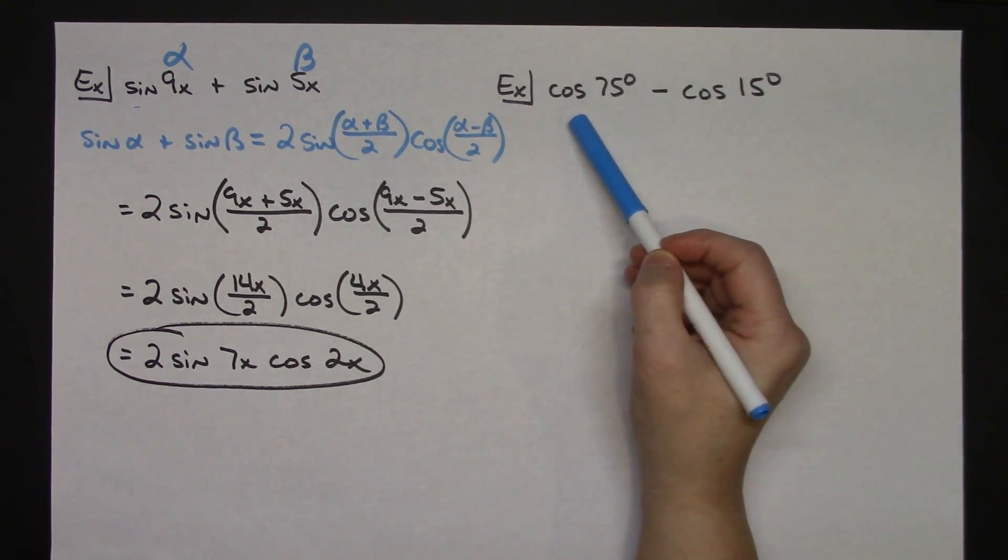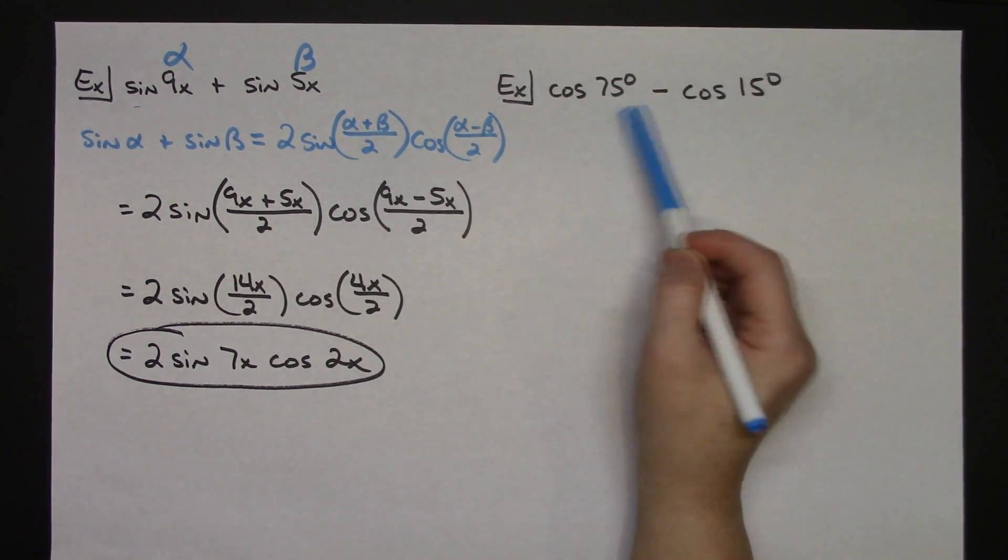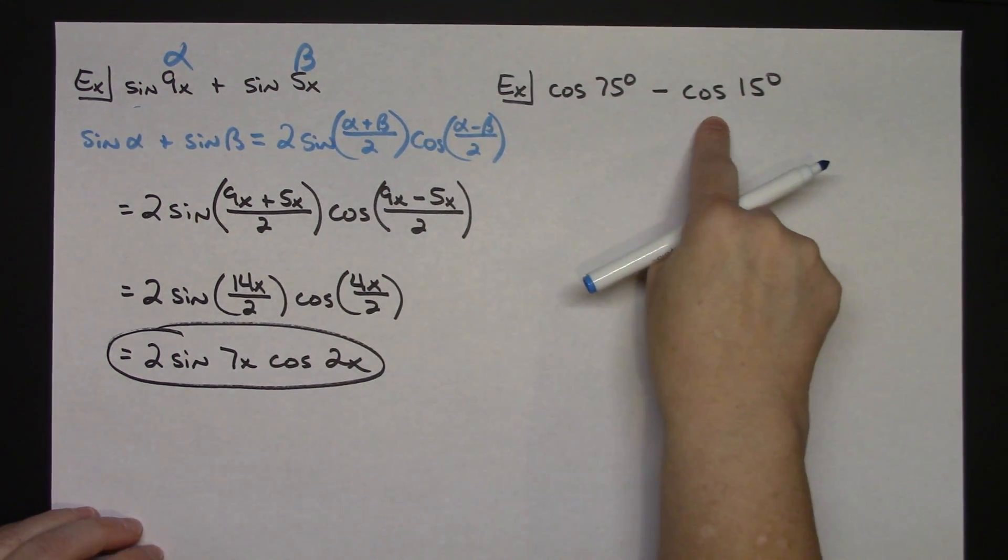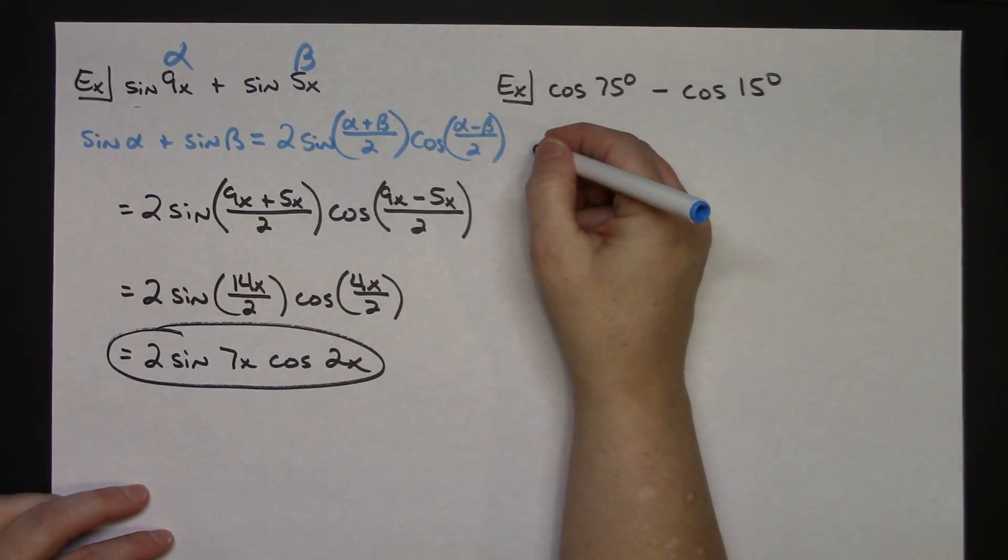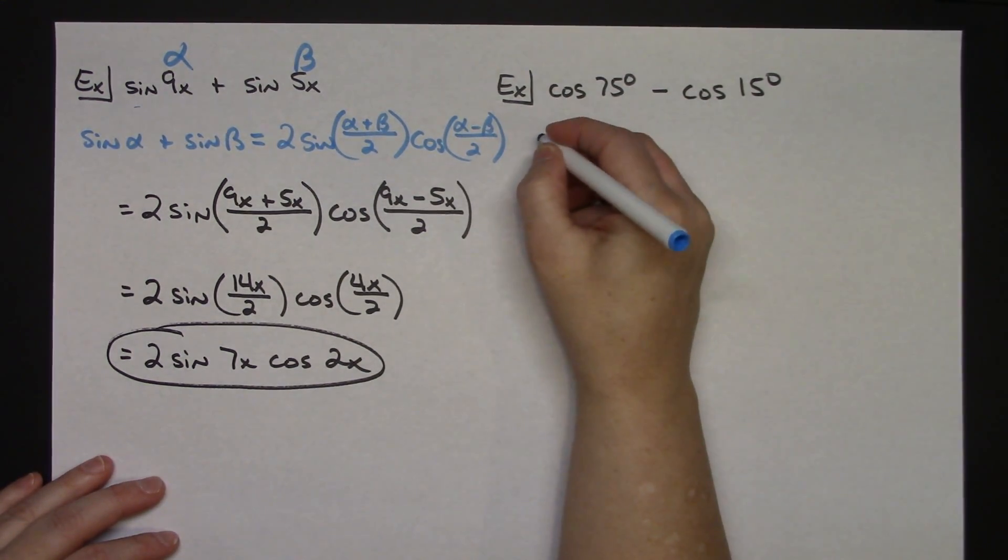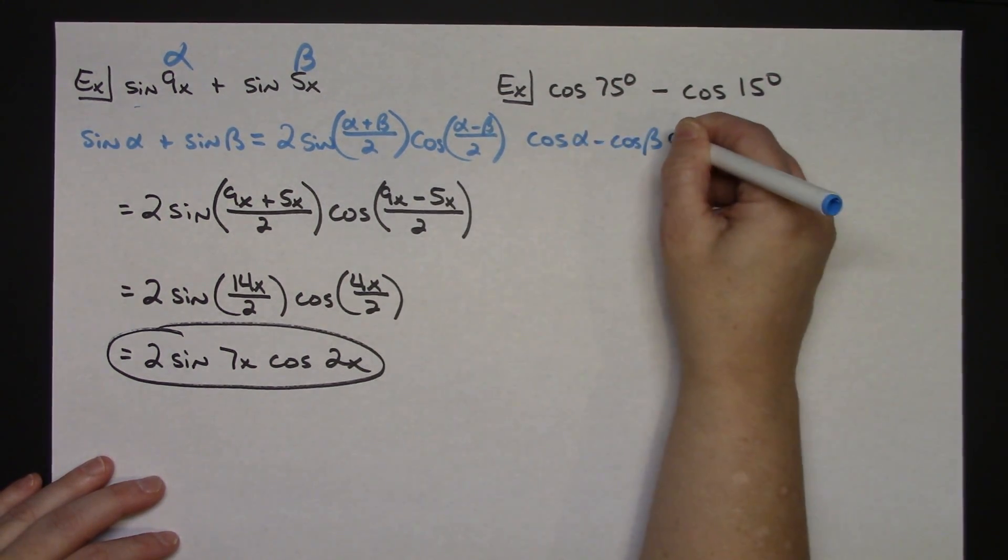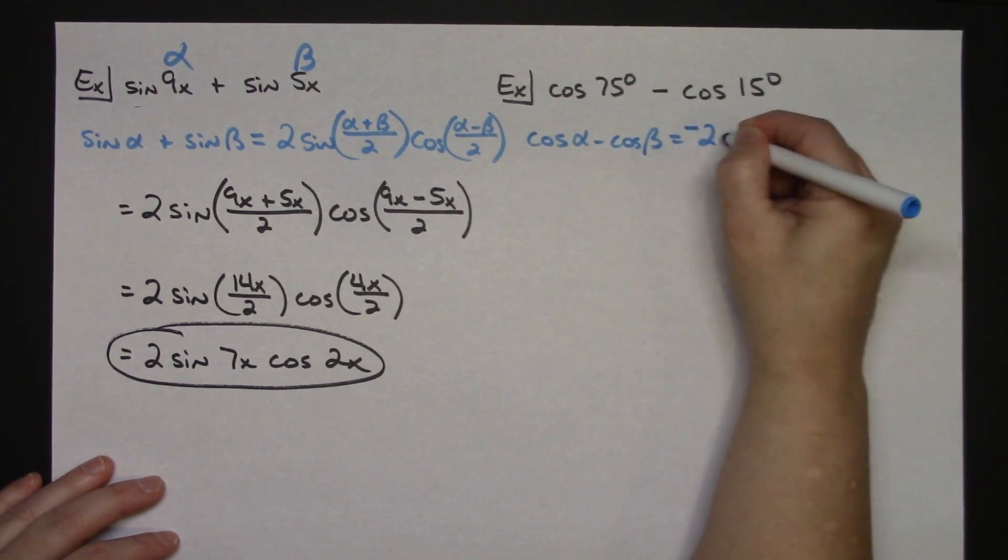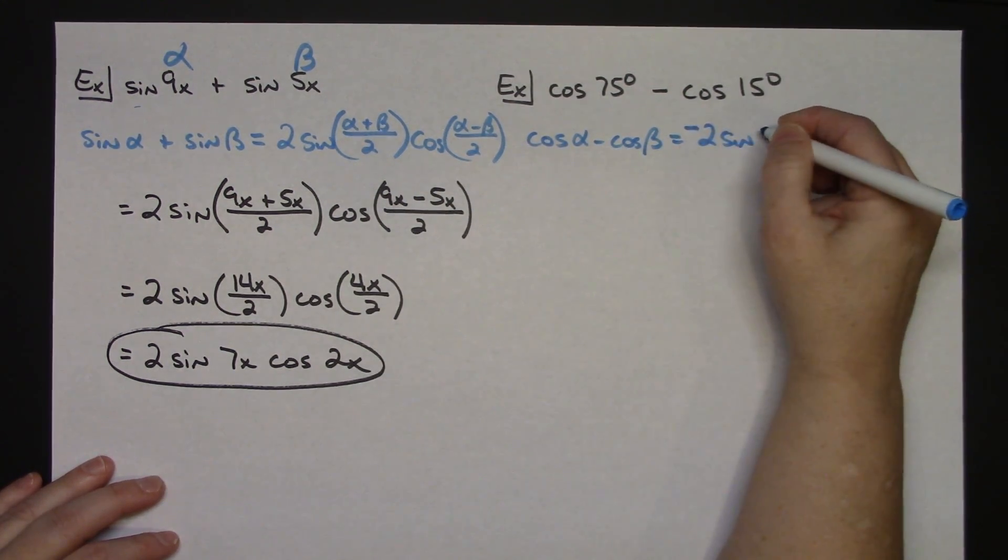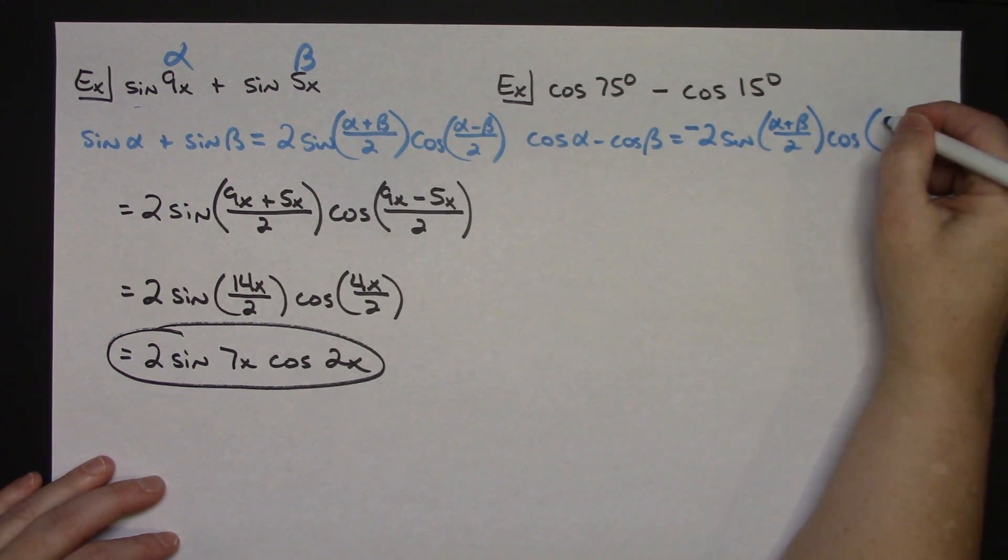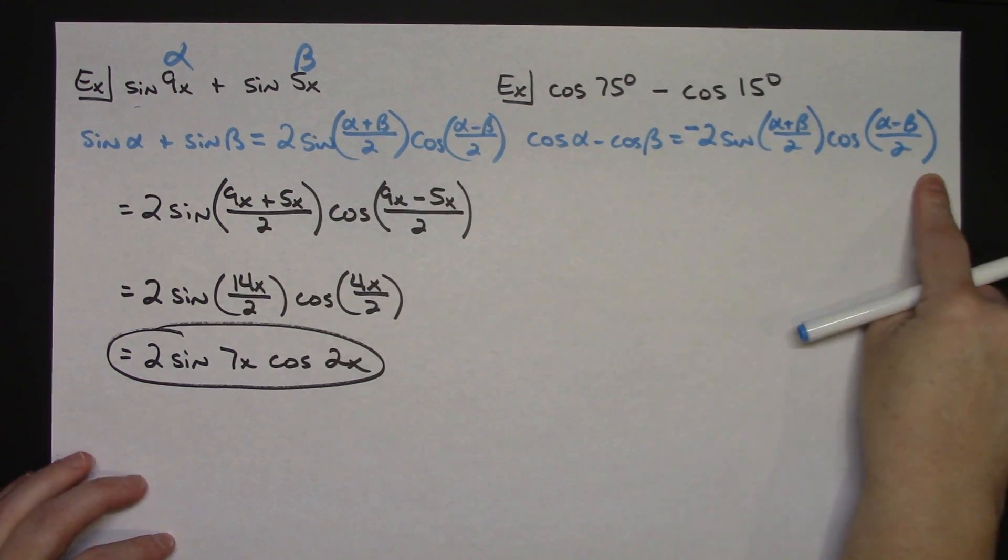So for my second example right here, again I've got a difference here so I'm going to be using those sum to product formulas. I've got two cosines. If you remember from that beginning chart that I gave you, cosine of alpha minus cosine of beta is going to be equal to a negative 2 sine. And then I'm going to add up my alpha and beta, divide by two, and then cosine I will subtract my alpha and beta and divide by two. So there's the entire formula written out.